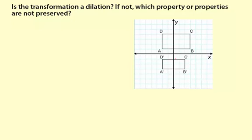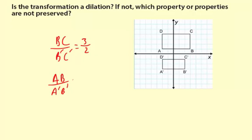Scale factor is the same for every dilated segment. Well, let's see, from BC to B'C', that is 3 to 2. And segment AB to A'B', that is 5 to 4.